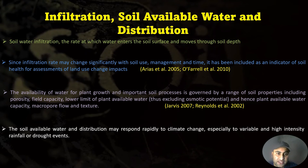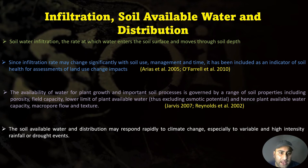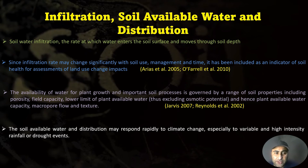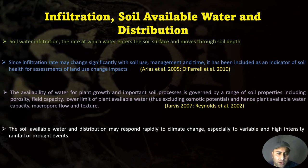The availability of water for plant growth and important soil processes is governed by soil properties including porosity, field capacity, lower limit of plant-available water, osmotic potential, plant available water capacity, macropore flow, and texture. Soil available water and its distribution may respond rapidly to climate change, especially to variable rainfall patterns or drought events.